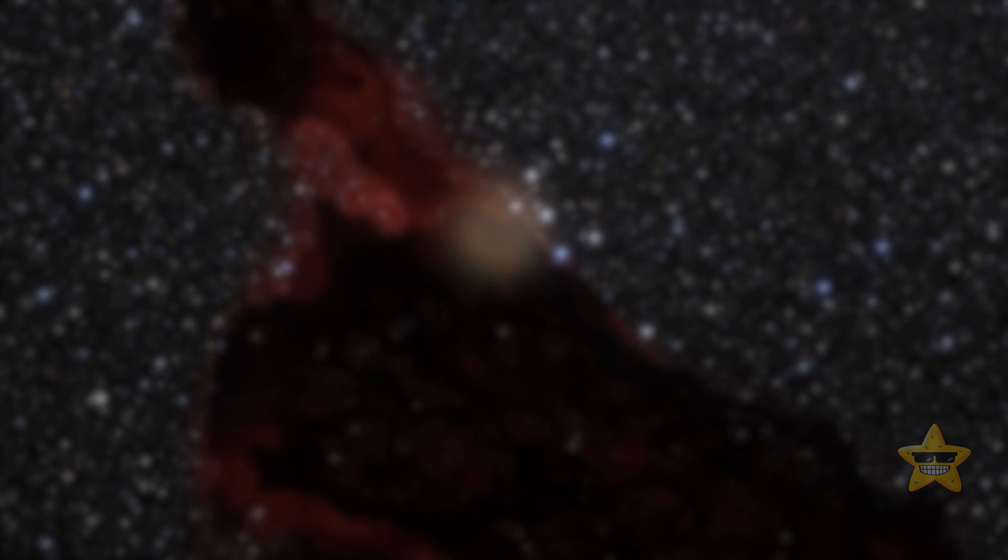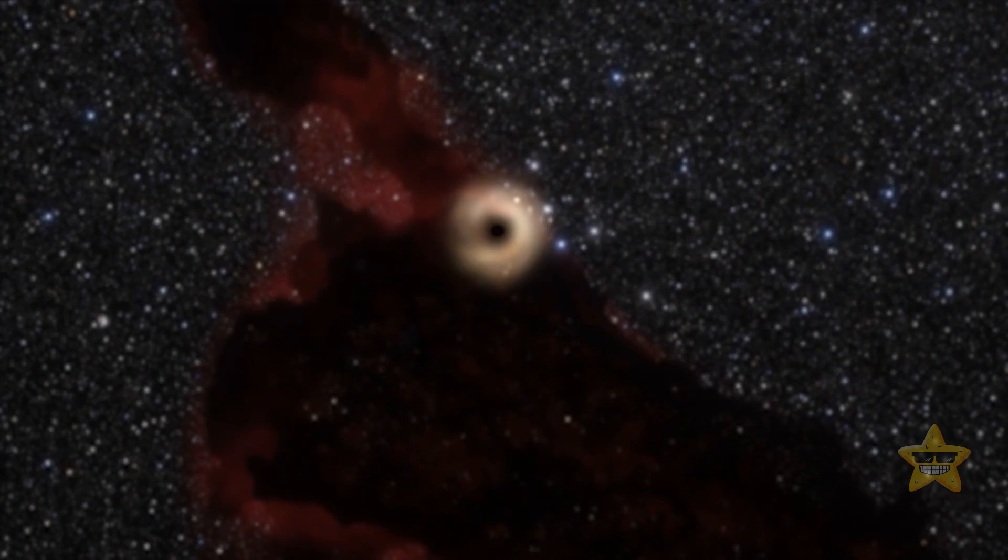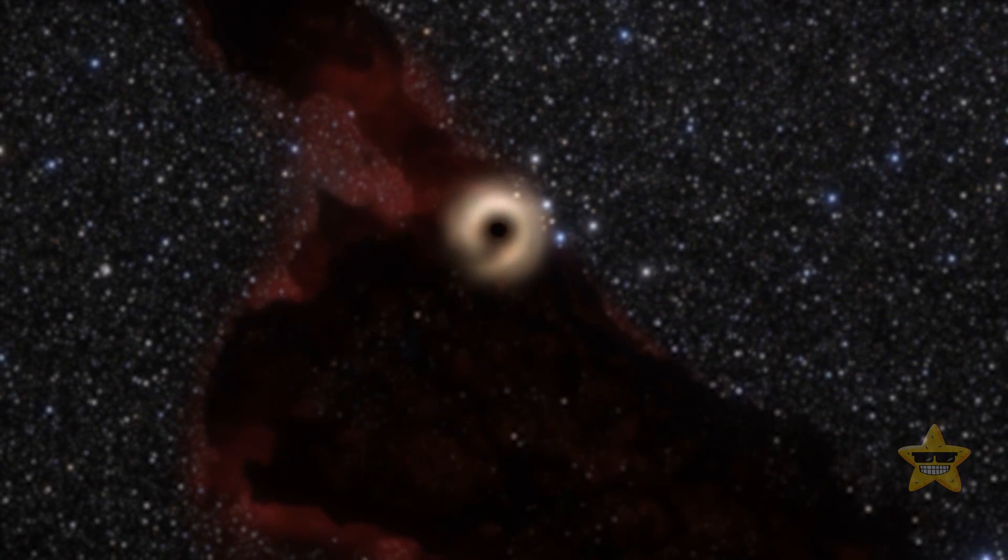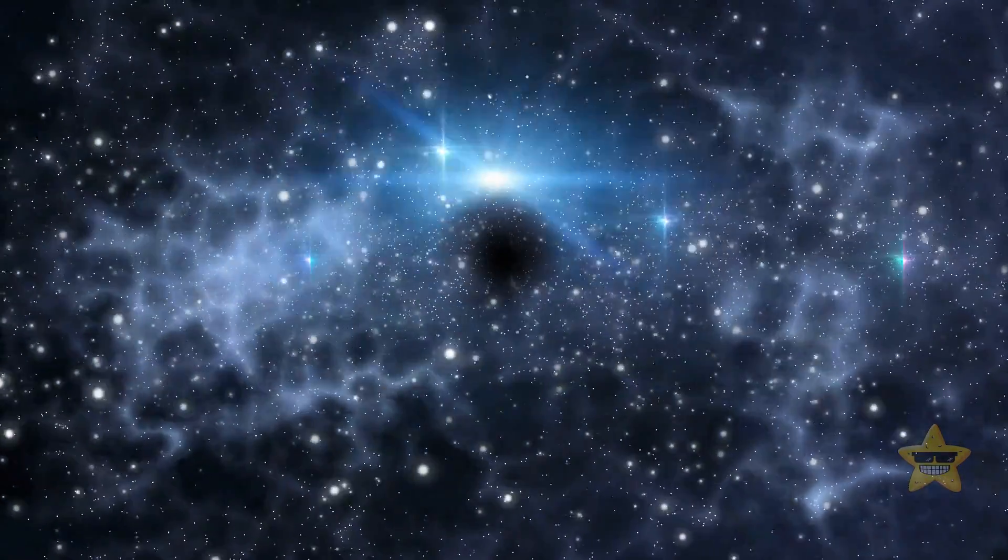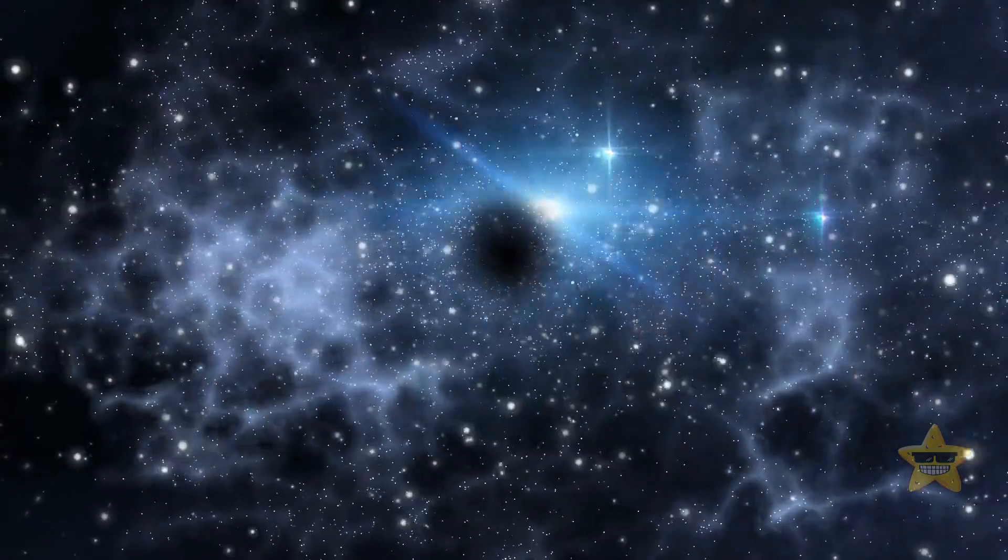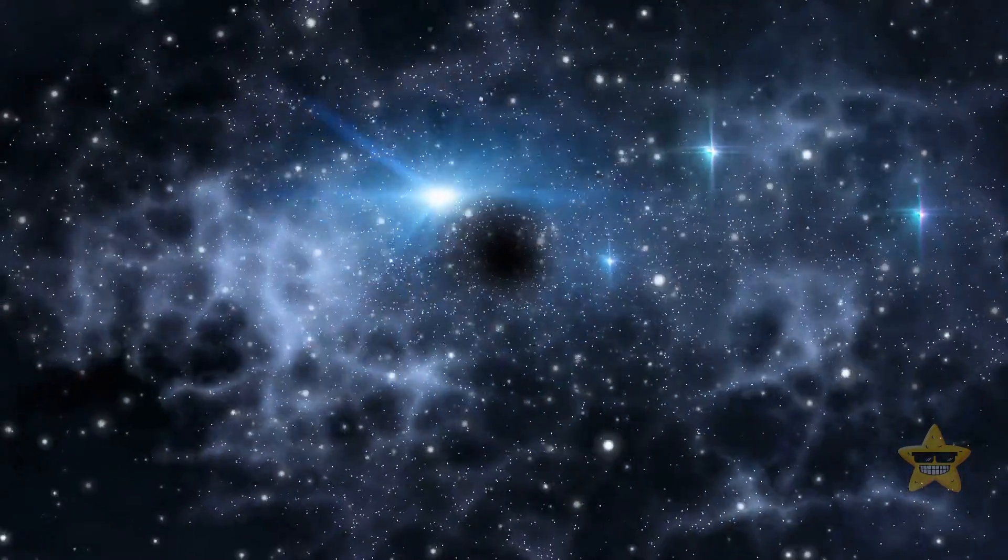We may not be able to see black holes directly, but special telescopes can catch what they do to their environment. For example, we can observe a star that makes circles around something we can't see instead of orbiting its binary companion star as we'd expect.